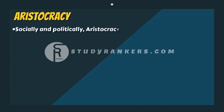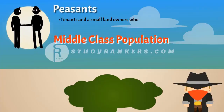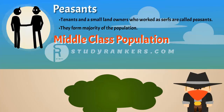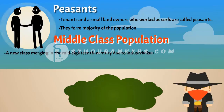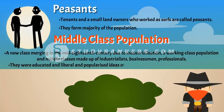Socially and politically, the aristocracy was the dominant class, who owned estates in the countryside and also townhouses. They were a numerically small group. They spoke French for purposes of diplomacy and in high society, and their families were often connected by ties of marriage. Tenants and small landowners who worked as serfs are called peasants — they formed a majority of the population. Different from these two classes, there was a new class emerging in the mid-18th century due to industrialization: a working class population and middle classes made up of industrialists, businessmen, and professionals. These groups were educated and liberal and popularized ideas of national unity and the abolition of aristocracy.